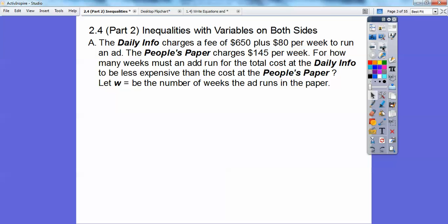The Daily Info, which is a newspaper, charges a fee of $650 plus $80 per week to run an ad. So this would be $650 plus $80W. The People's Paper charges $145 per week, so that's just $145W. For how many weeks must an ad run for the total cost of the Daily Info to be less expensive than the cost of the People's Paper? We're going to let W be the number of weeks that the ad runs in the paper.